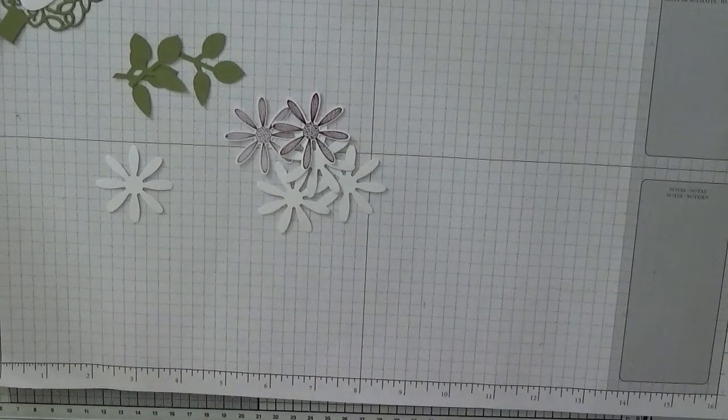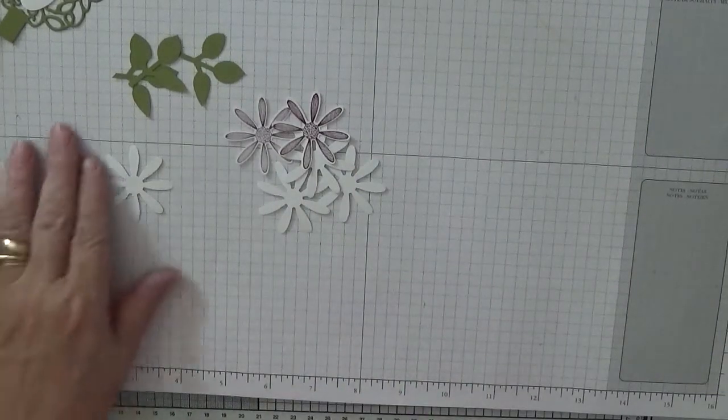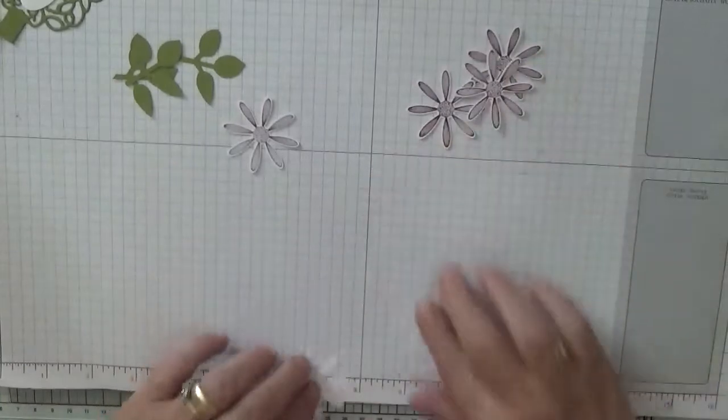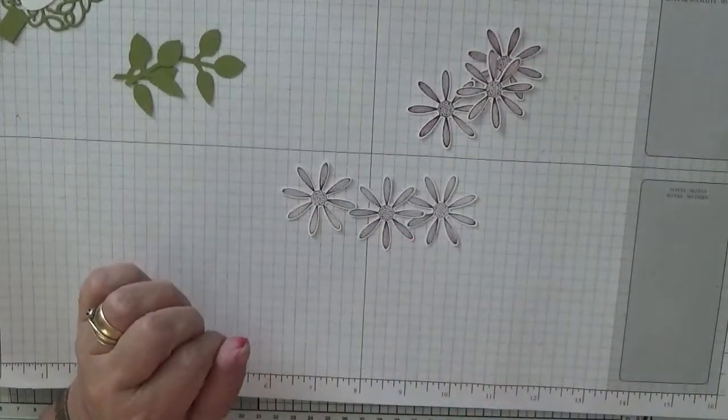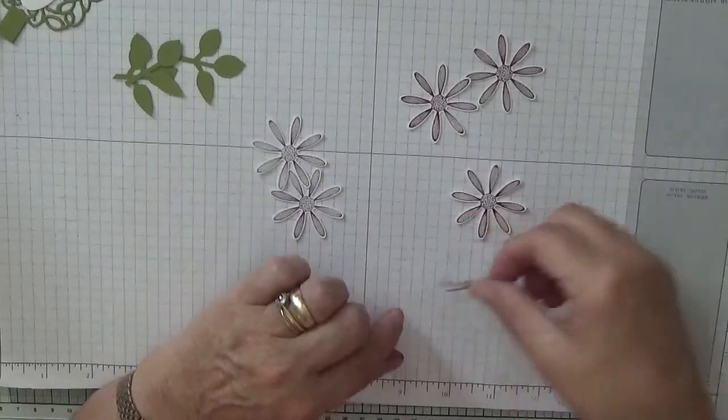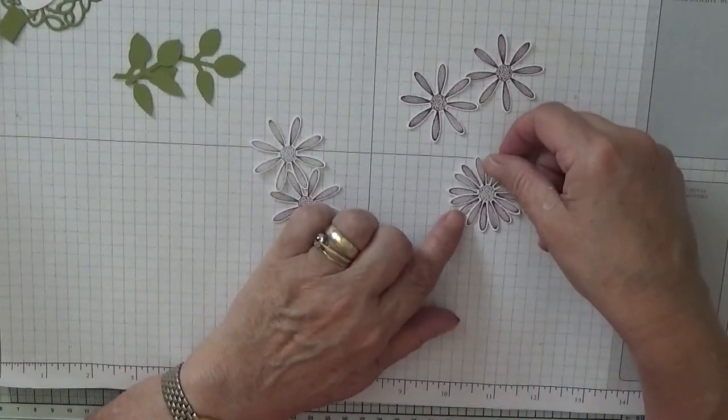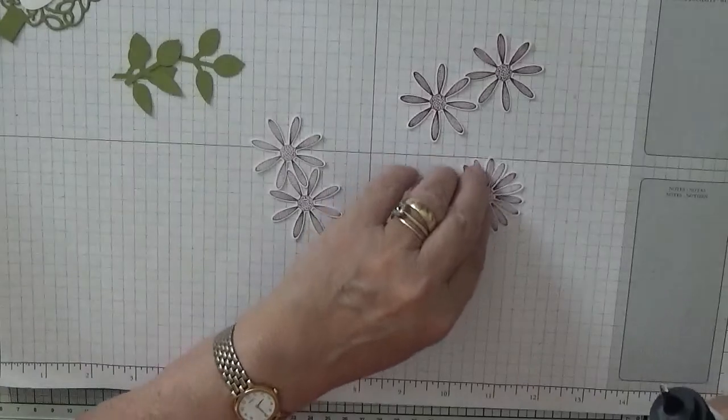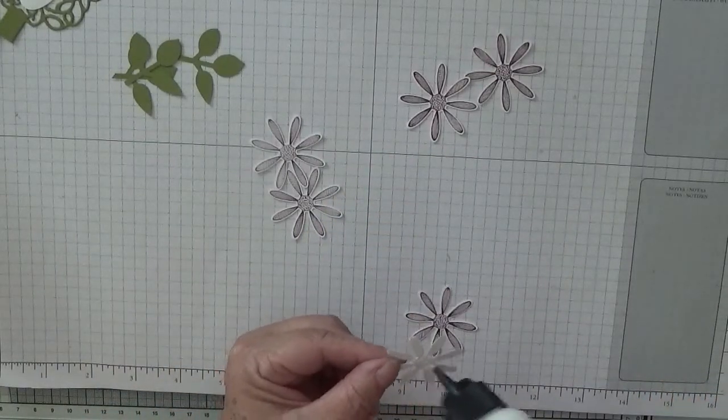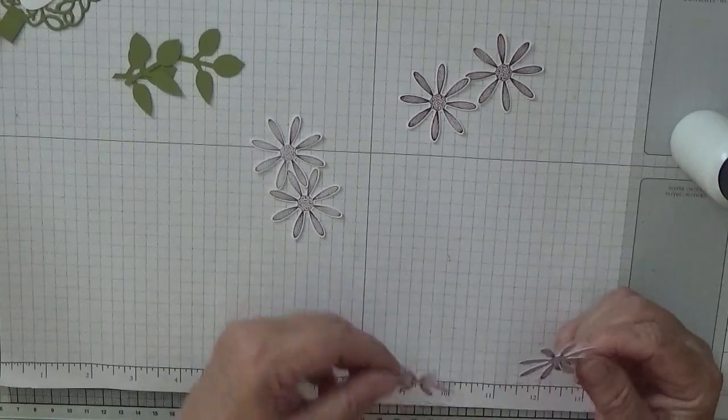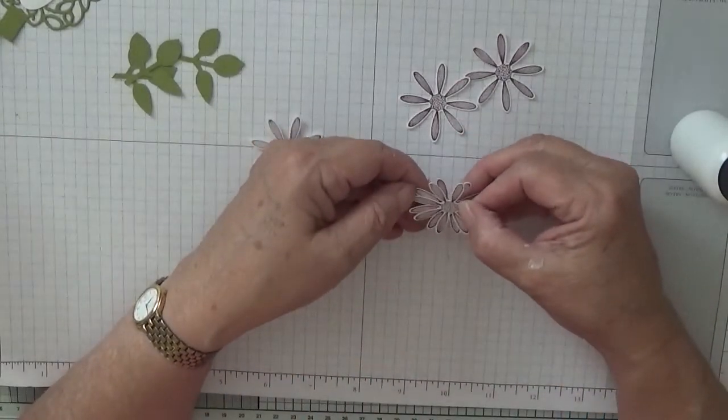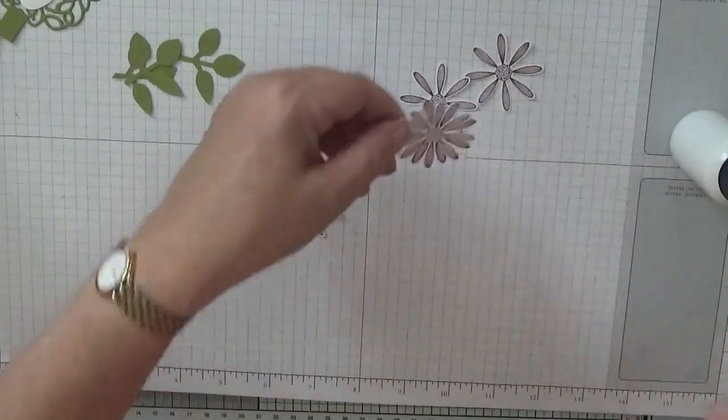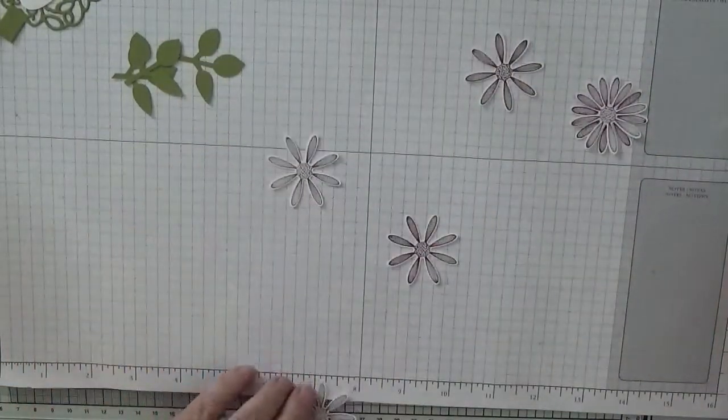Right, alright, get rid of that. And now I have to work out which one's which. Right, there are the three. So as they're darker, the Rich Raspberry are darker, I am going to stick them to the bottom and put the Blackberry Bliss to the top. Just gives it a two-tone effect.